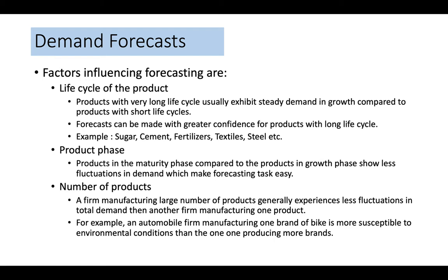Forecasting also depends on the product phase. Products in the maturity phase show less fluctuation in demand compared to products in the growth phase, making forecasting in the maturity phase easier. Forecasting also depends on the number of products. A firm manufacturing a large number of products generally experiences less fluctuation in total demand than a firm manufacturing one product, because overall demand remains more constant across a portfolio.